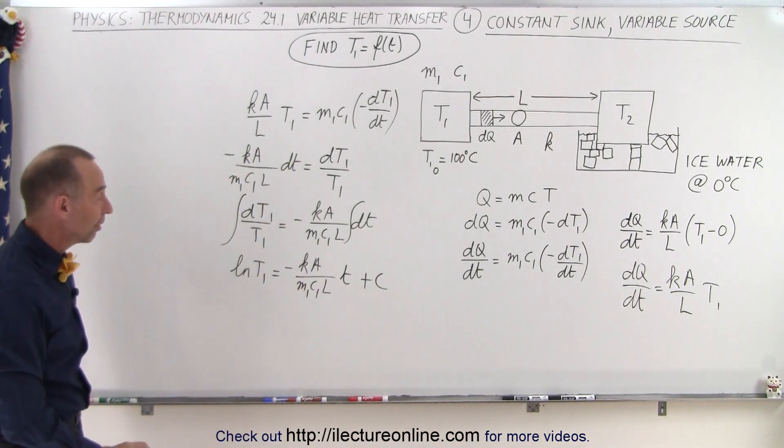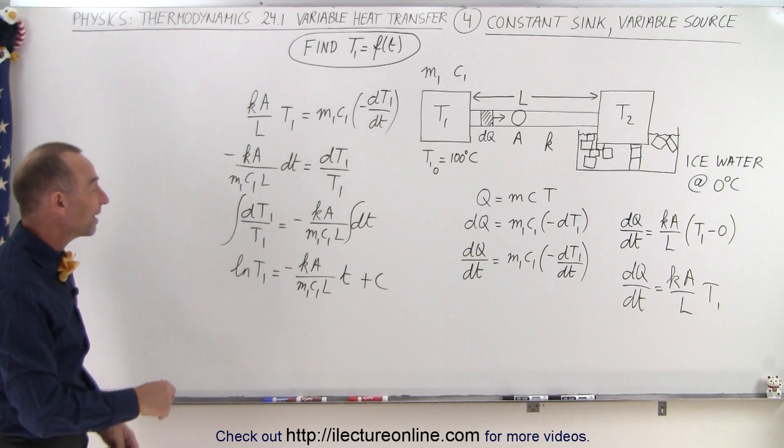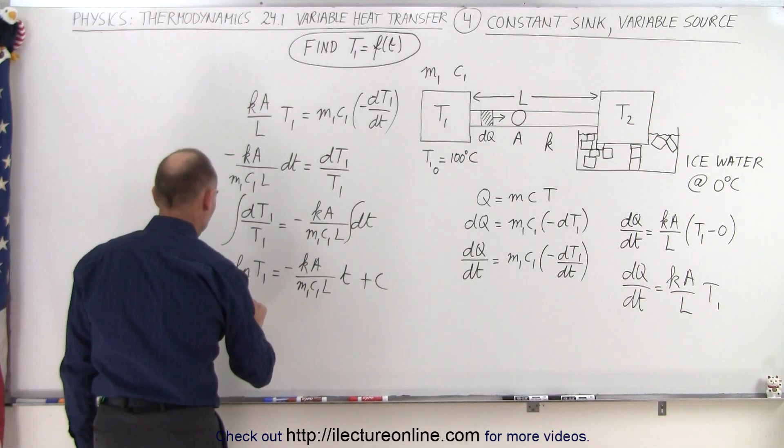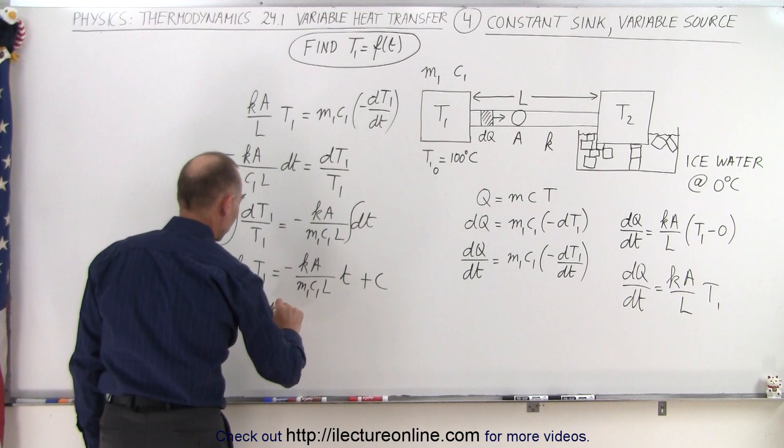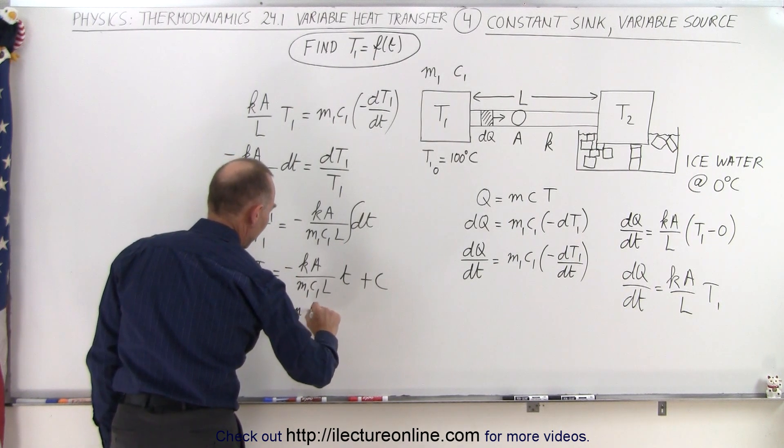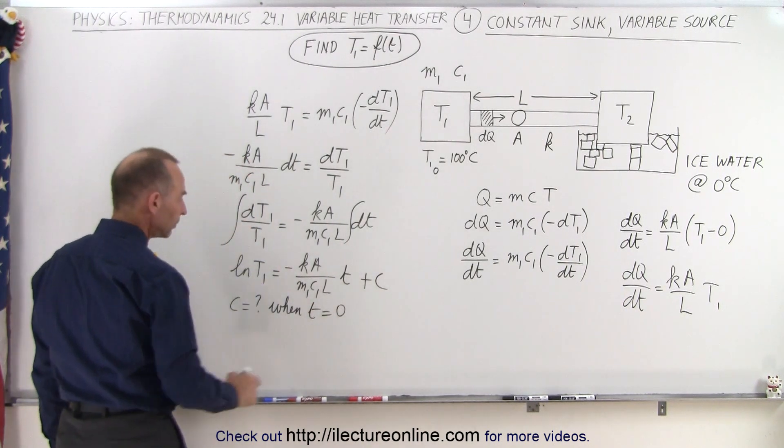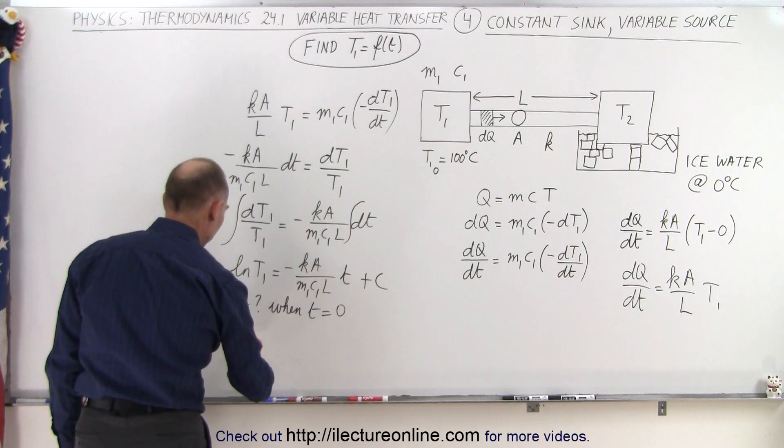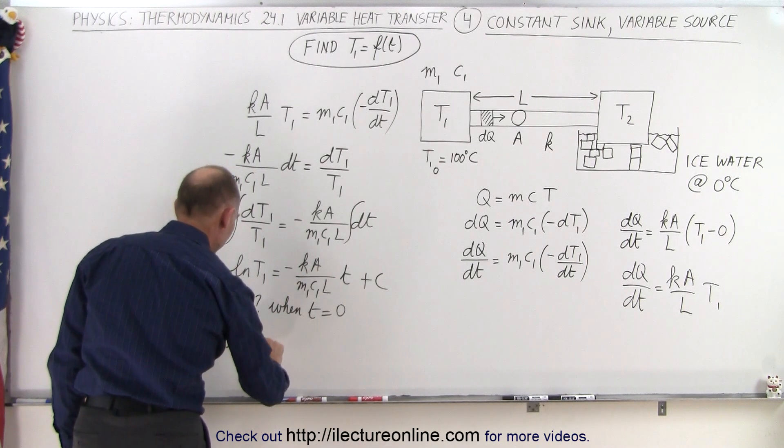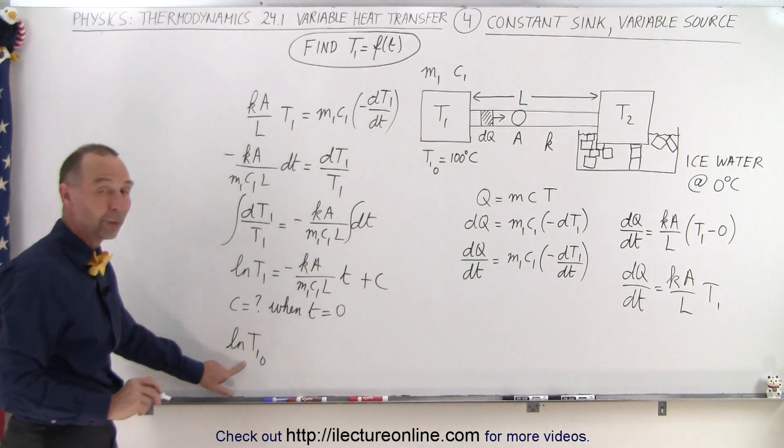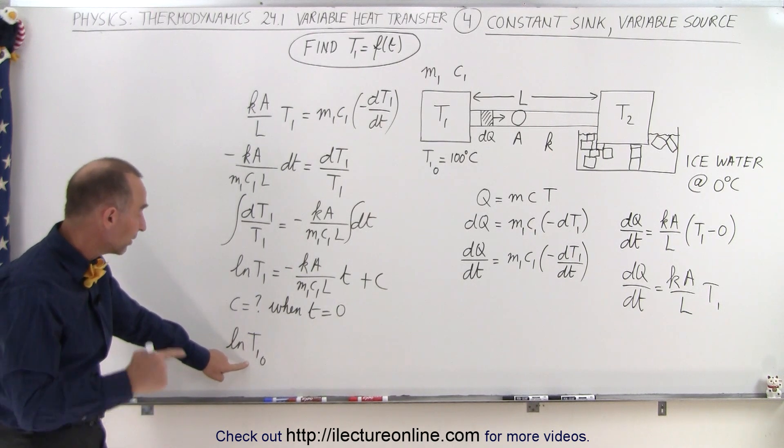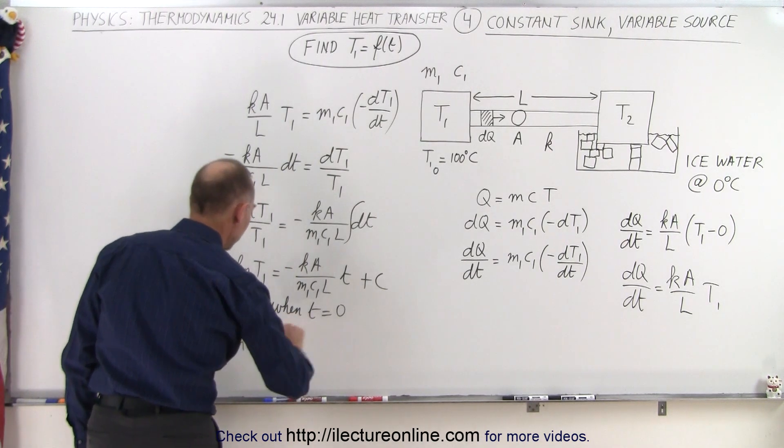Now, all we have to do is find the constant of integration by setting t equal to 0. So c is equal to question mark when the time is equal to 0. So make that equal to 0, then we know that the natural log of t1 initial, because that's what t1 is equal to when time is equal to 0, is equal to c.